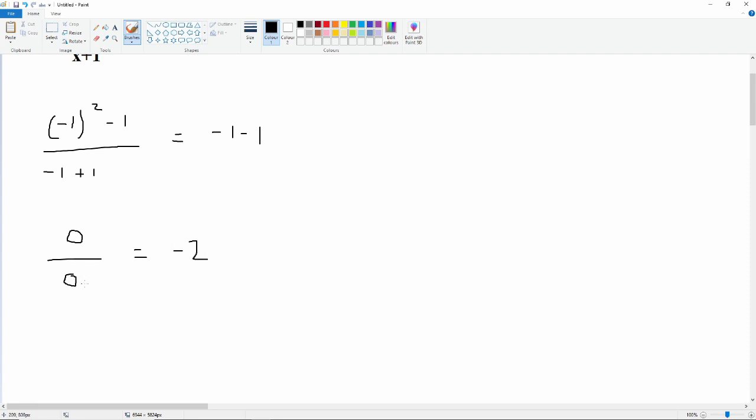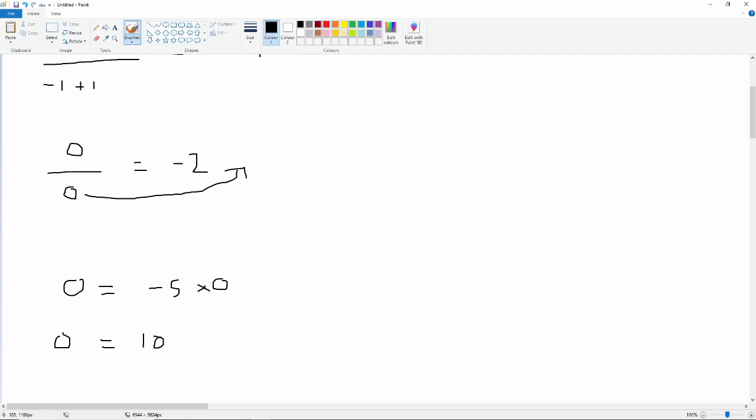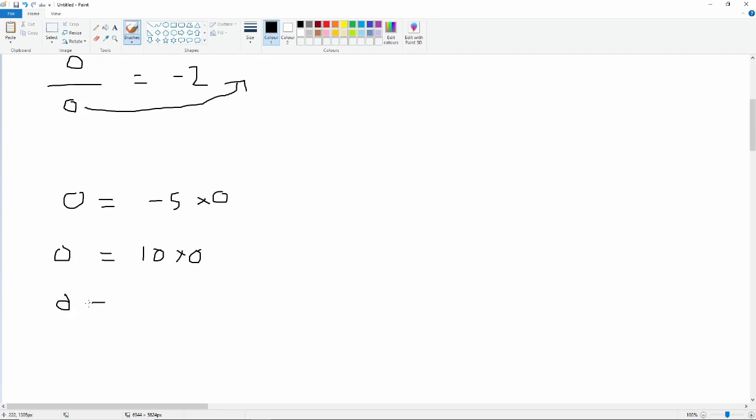I suppose you can say if we bring that 0 up and say negative 2 times 0 is 0, true, but then anything times 0 is 0. So for example, we could say 0 is equal to minus 5 times 0 or 0 is equal to 10 times 0 or 0 is equal to pi times 0.